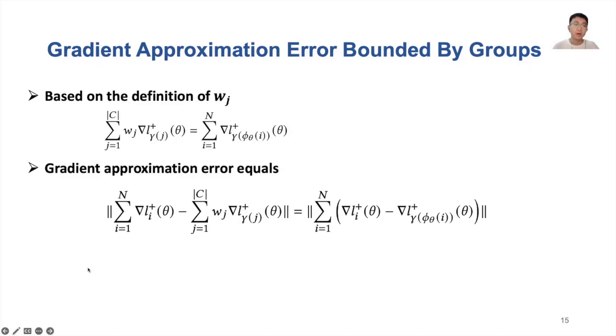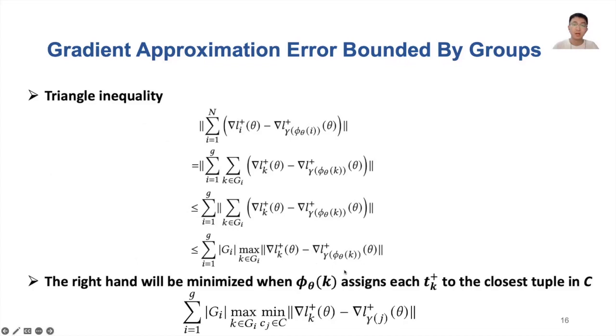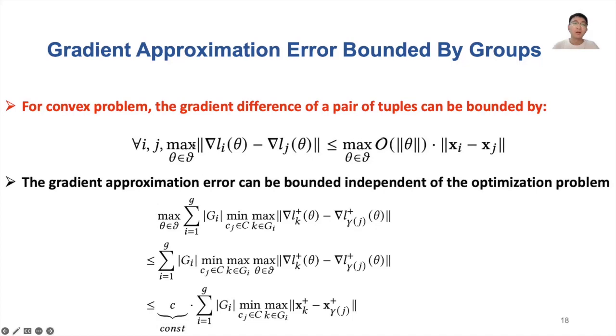Firstly, using the definition of weights, we have this equation. We can then use this equation to first transform the gradient approximation error like this. After that, we can apply triangle inequality. Recall from the aforementioned example, intuitively, the right hand will be minimized when the mapping φ decides to assign each tuple in T plus to the closest tuple in the coreset with regard to the gradient. So the right hand can actually be rewritten as this. After that, by leveraging max mean inequality, we can get the following expression. Furthermore, from the convex problem, there is a theorem that the gradient difference can be bounded by the Euclidean difference between feature vectors. Therefore, we can conclude that the gradient approximation error can be bounded independent of the optimization problem in practice. Thus, we come to this result.